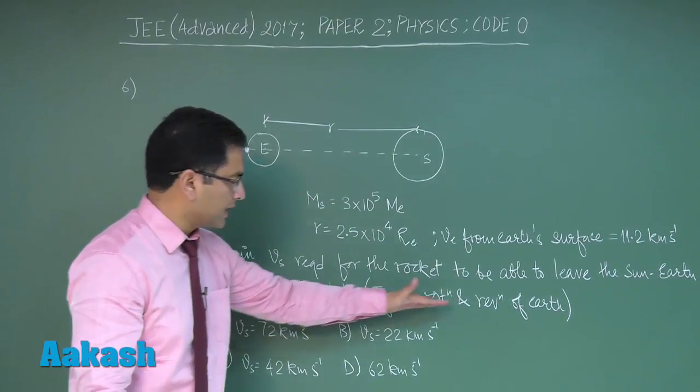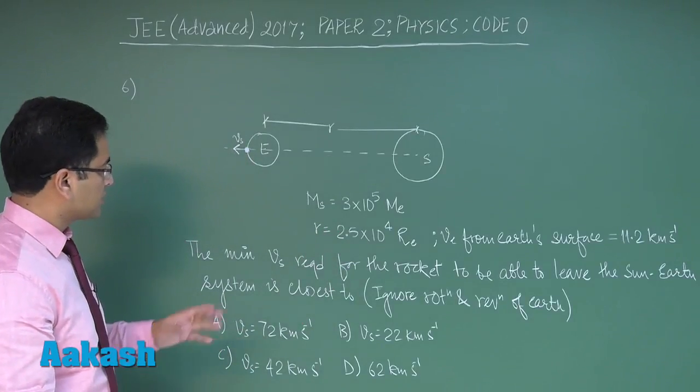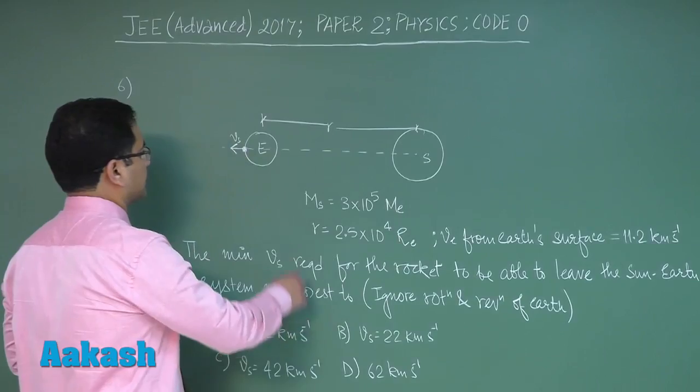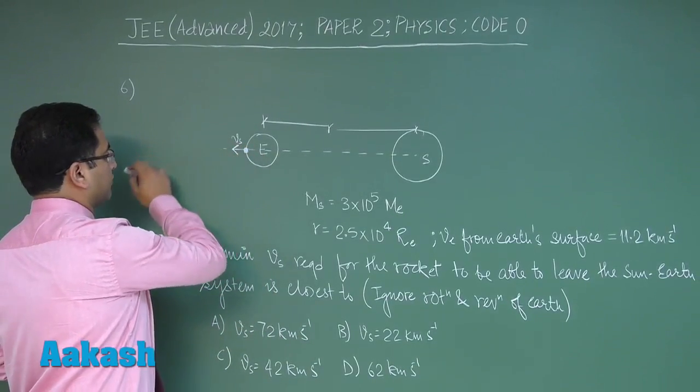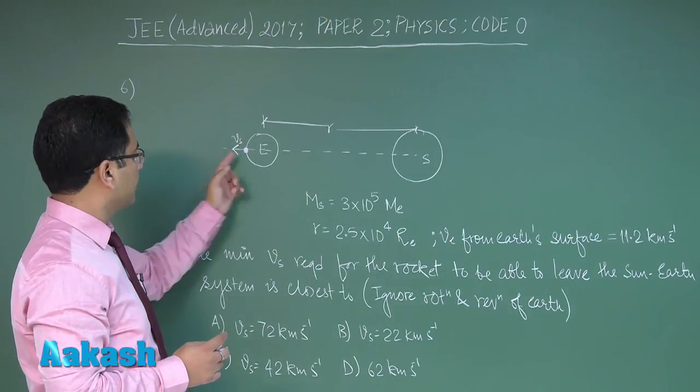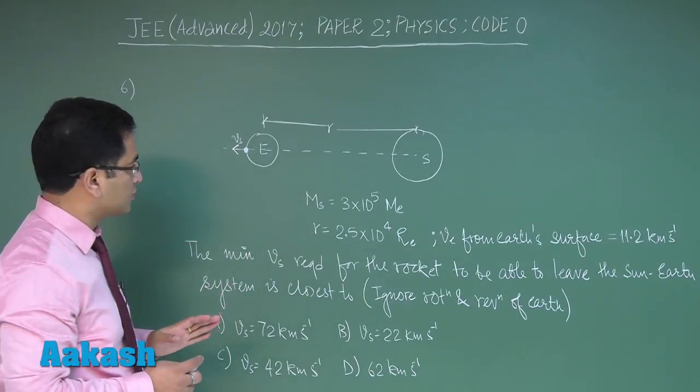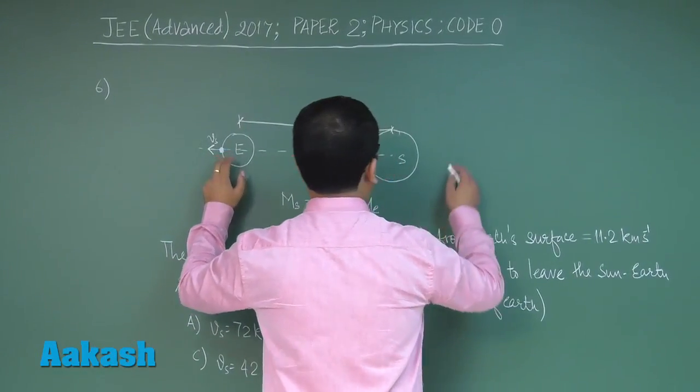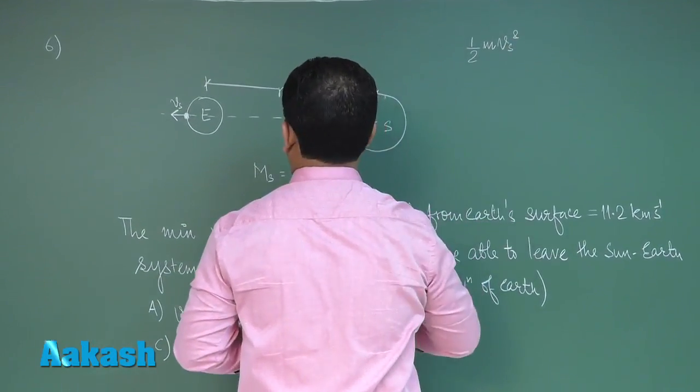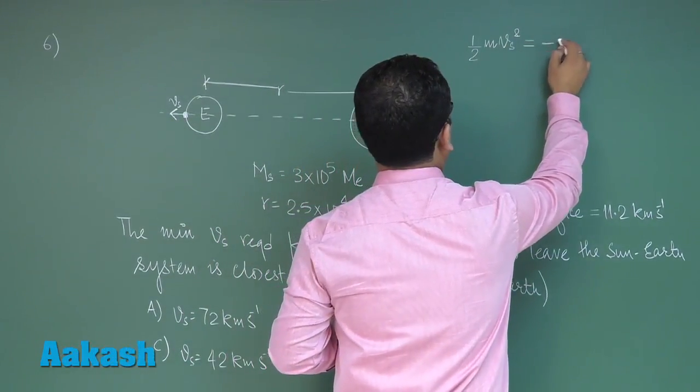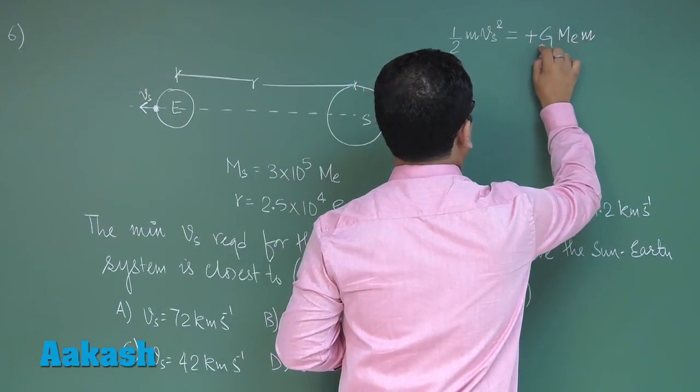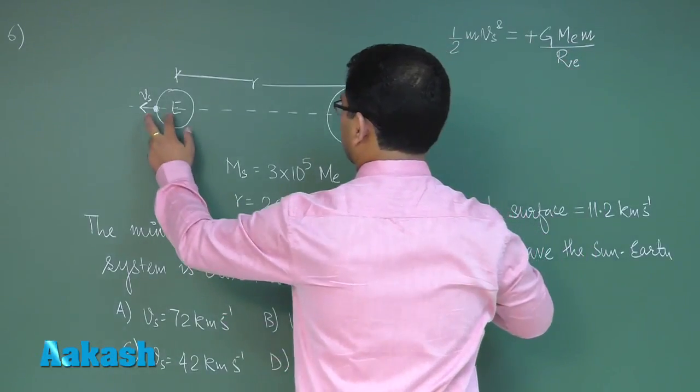But that thing is to be neglected. So let's try to see - question of conservation of energy. When it escapes and reaches infinity, minimum is asked, so its velocity at infinity would be just equals to zero. So straightway using energy conservation: one-half m vs square would be equals to minus G, or this would be plus here, mass of earth times mass of satellite by the radius of earth.